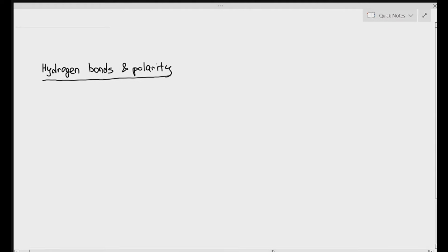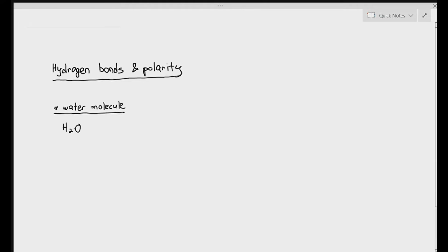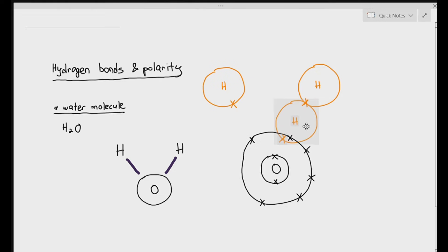But before we talk about that, let's just look at water molecules. Water, if you remember, is basically H2O where it's made up of two hydrogen atoms covalently linked to one oxygen atom. For that to happen, the hydrogen will have to share one of its electrons with oxygen. The other hydrogen will also have to share one of its electrons with oxygen, and the oxygen's valence shell will have a total of eight electrons which makes it stable.